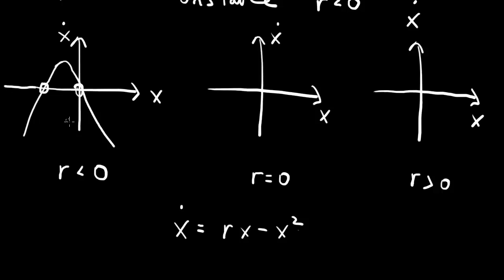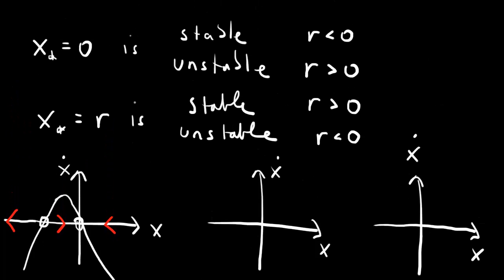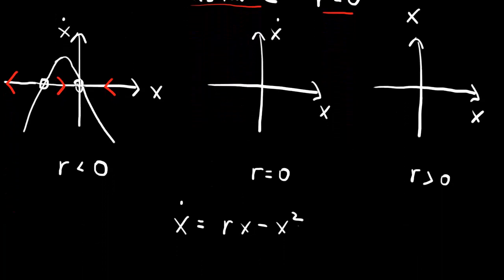We've already calculated the stability: for r less than zero, x-star equals r (the negative fixed point) is unstable, and x-star equals zero is stable. We can see this from the flow: if x is to the left of x-star equals r, x-dot is negative so we move further left; between the two fixed points x-dot is positive so we move toward zero; and for positive x, x-dot is negative so we move back toward zero. So x-star equals r is unstable (open circle) and x-star equals zero is stable (filled circle).